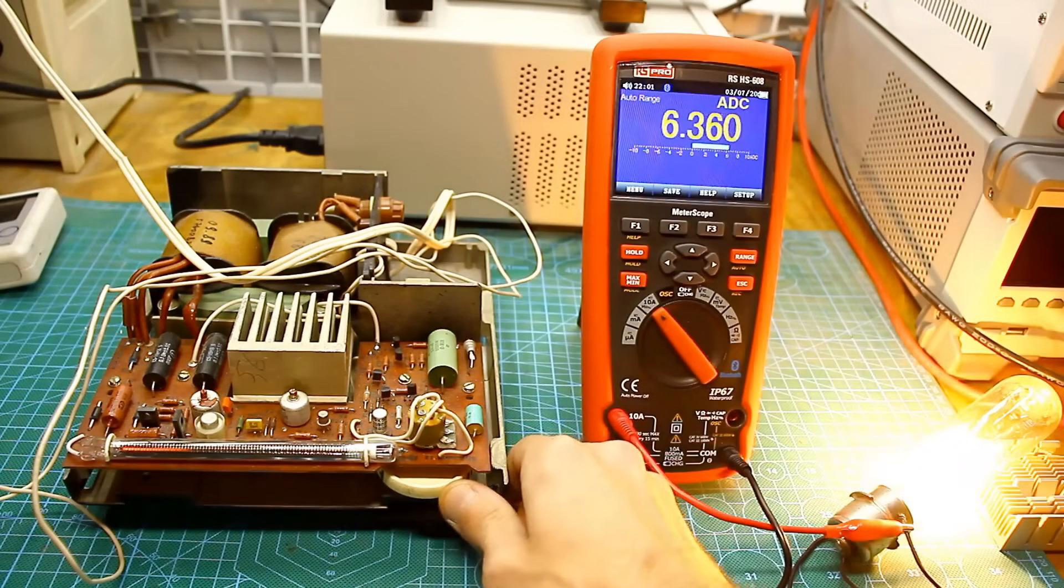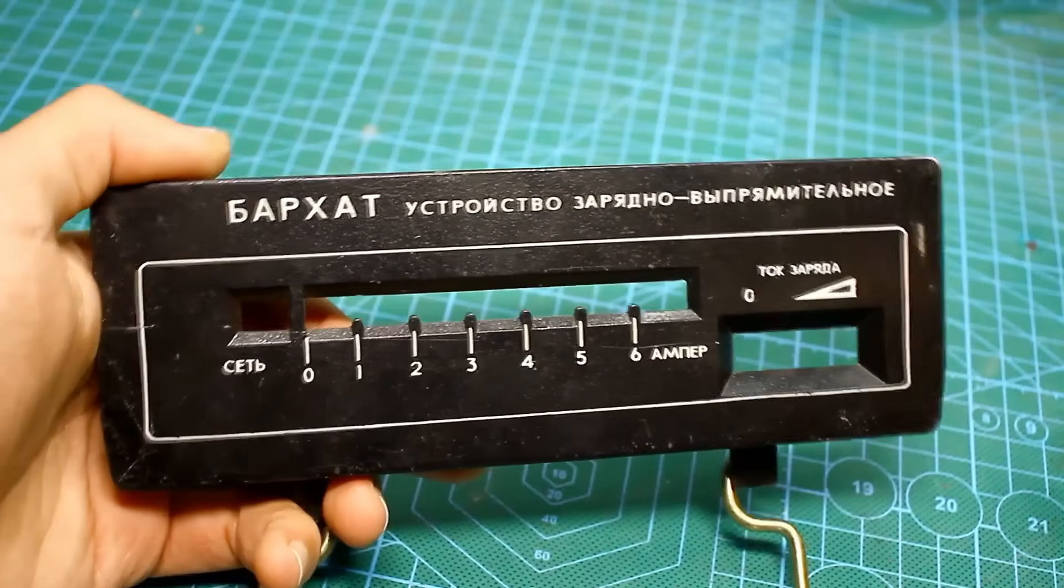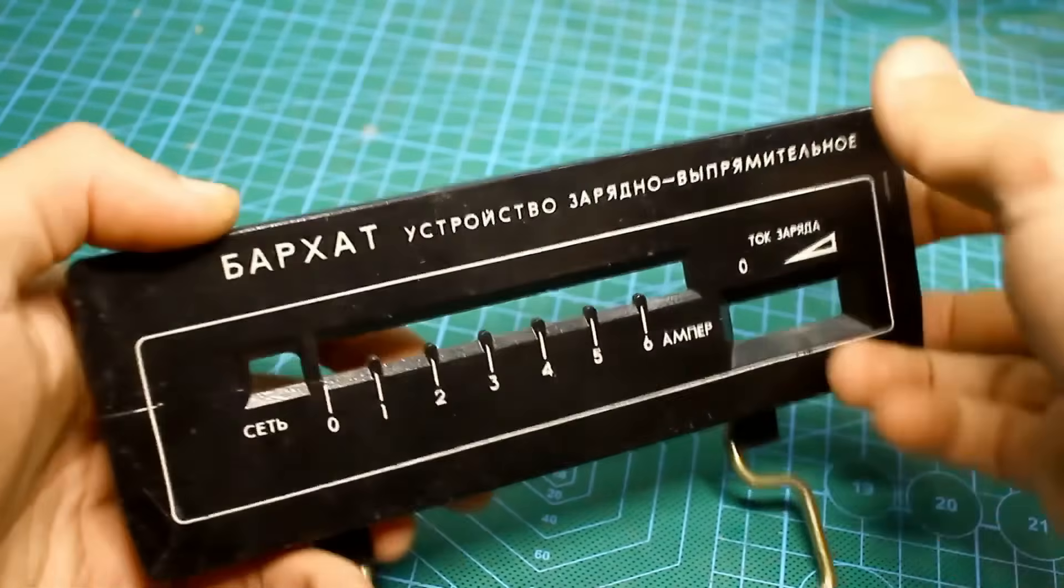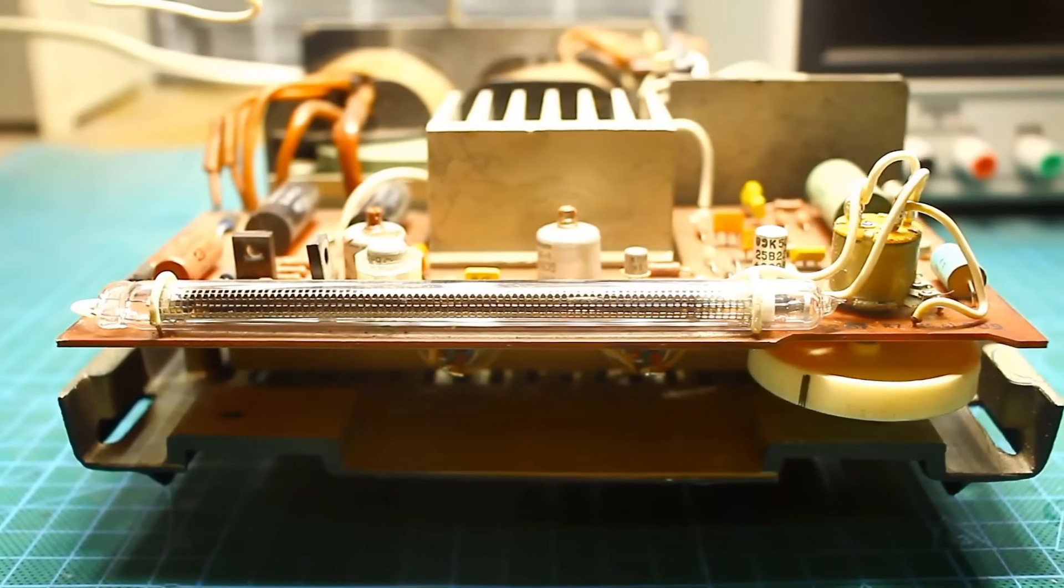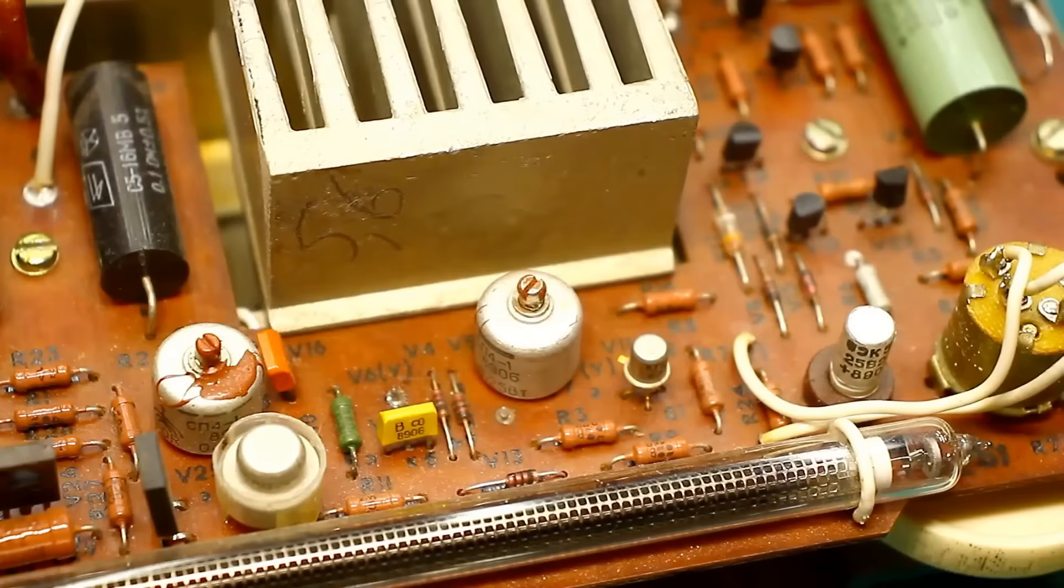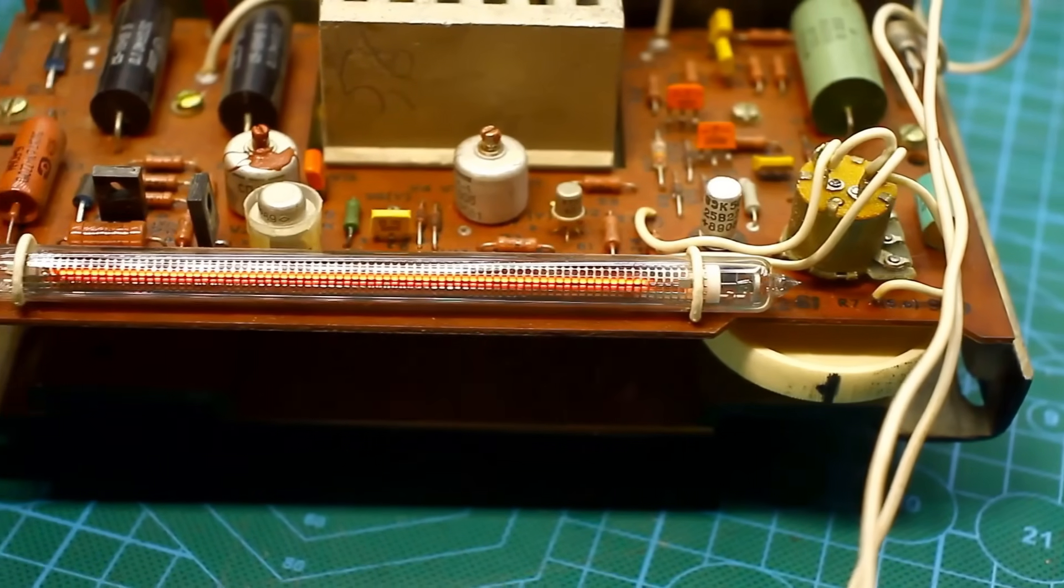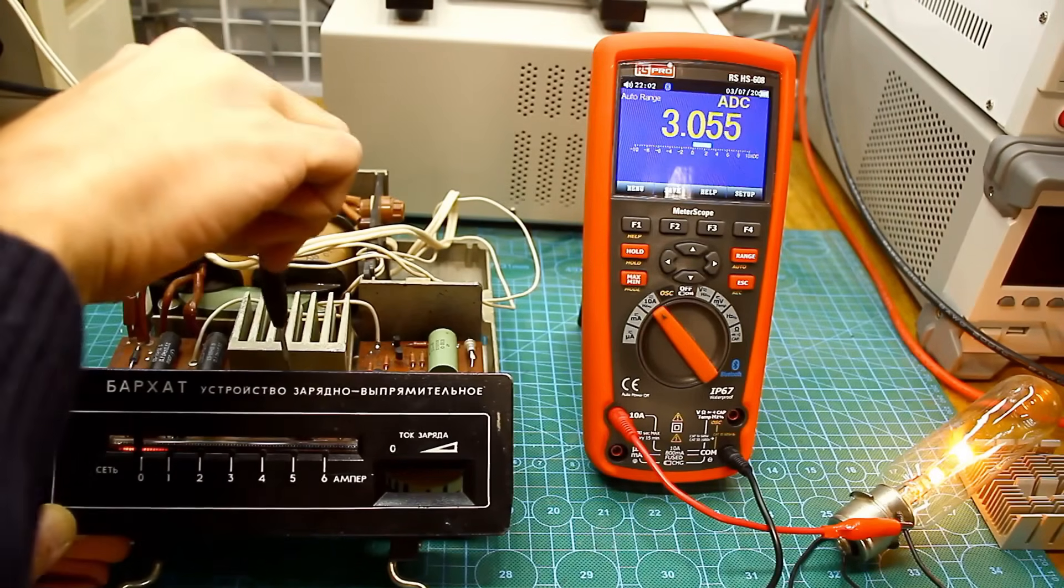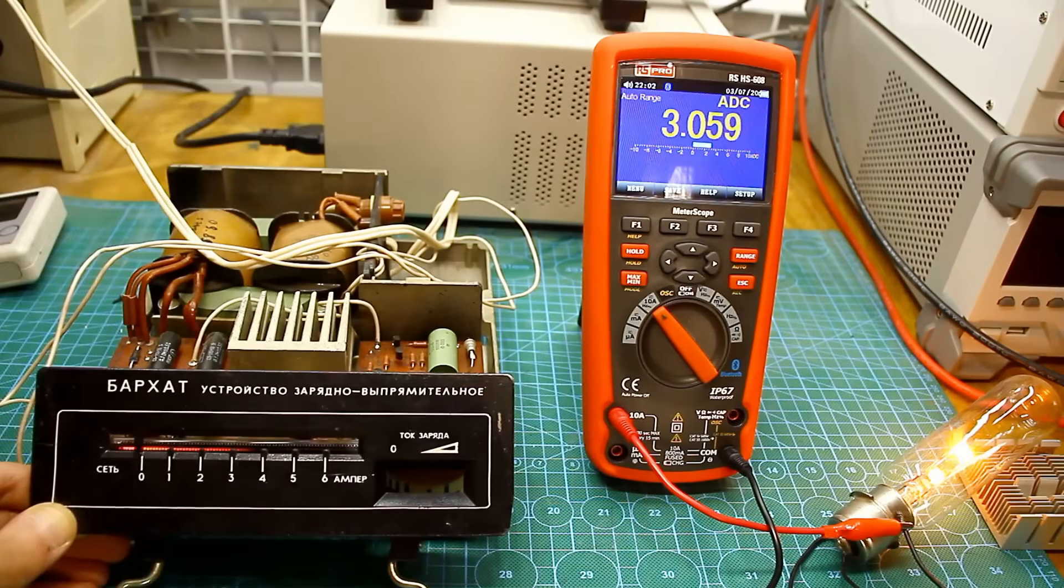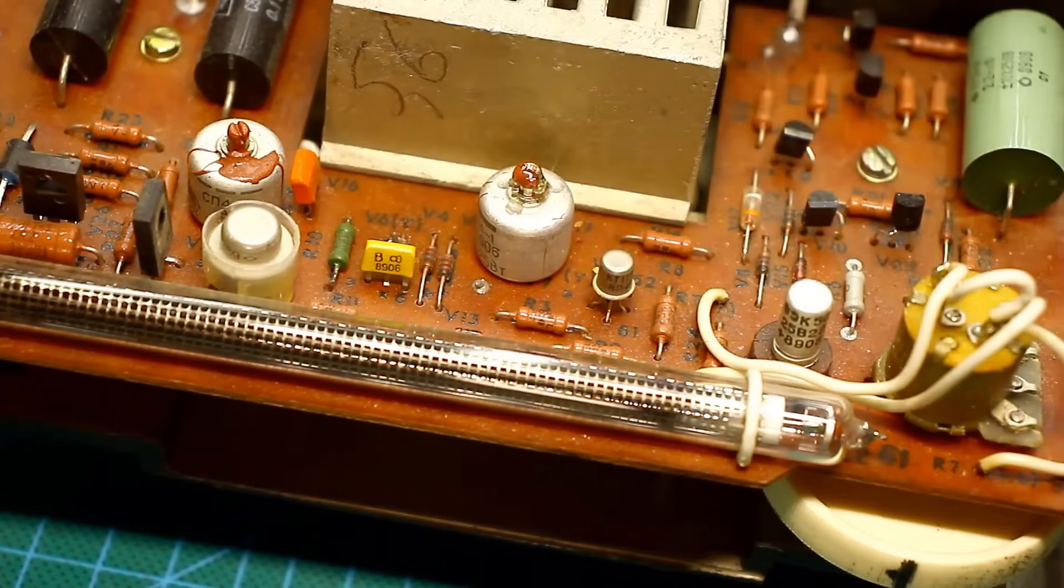But it's clearly noticeable that the current indicator shows an unclear value. On the front panel, there is a scale for the current and full illumination of the indicator equals a current of about 6A. The owner told me that he adjusted one of the trimmer resistors on the board. Here, by the way, is that resistor. It's specifically for calibrating the scale. So we need to recalibrate the scale once more. We'll set the device output current to about 3 amperes. Then, adjust the trimmer until the indicator shows the required value of the current. At the very end, don't forget to seal the trimmer resistor screw.